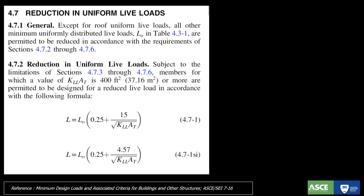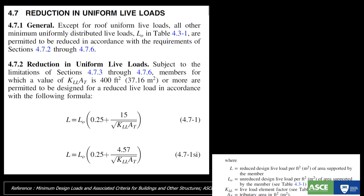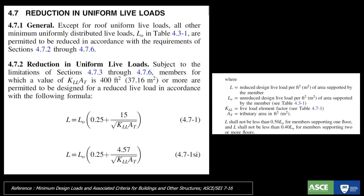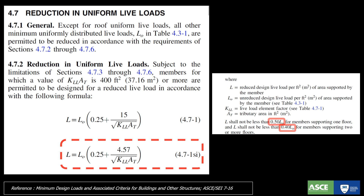The reduction in uniform live load could be calculated as per this equation. The live load could be reduced by a maximum of 50% for one floor, and could be reduced by a maximum of 60% for two or more floors.